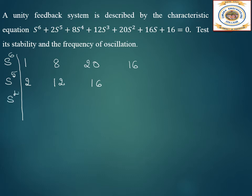For the s⁴ row: (2×8 − 12)/2 = 2; (2×20 − 16)/2 = 12; (2×16)/2 = 16. So s⁴ row is 2, 12, 16. For the s³ row: (2×12 − 2×12)/2 = 0 and (2×16 − 2×16)/2 = 0. Both terms are zero, so we cannot proceed with the standard method.